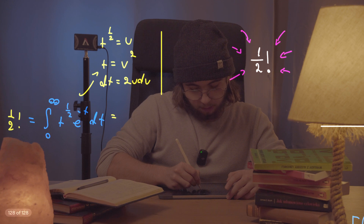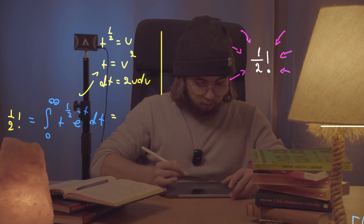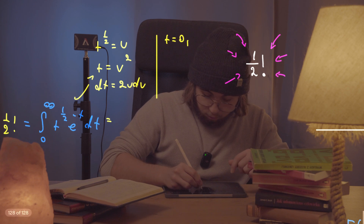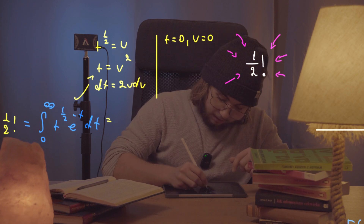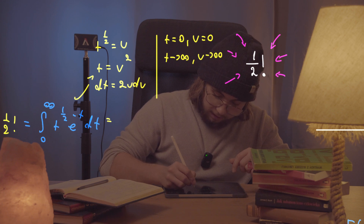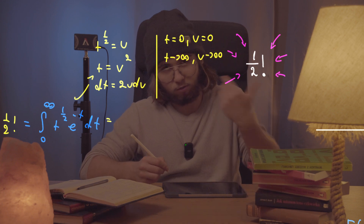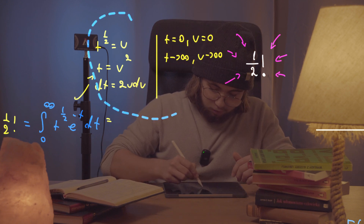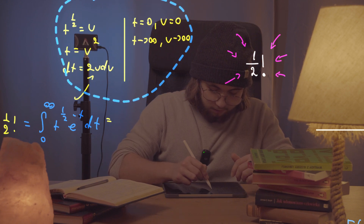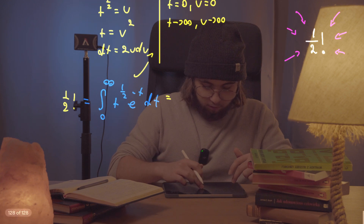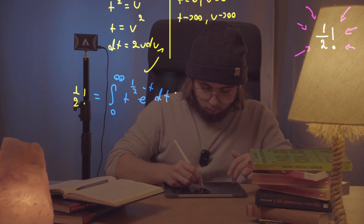What about the bounds of integration? Whenever t equals zero, u equals zero — just fine. And when t approaches infinity, u will also approach infinity, since u approaches the square root of infinity, which is just infinity as well. That's everything we need for the u-substitution.